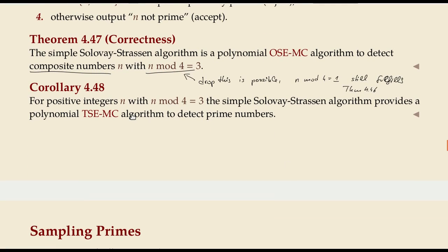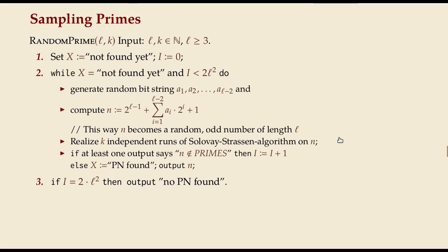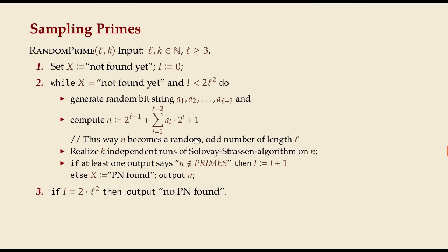This corollary is basically what you've shown in the exercises: whenever you have a one-sided error Monte Carlo method you can make it a two-sided error method for the inverse problem. Here we detect composite numbers but we actually want to detect primes. Even for the restricted version of this primality test there's a sensible application: sampling large primes, which is really a practical thing relevant in cryptography. You'd like to generate a random number that's prime with a few hundred digits.